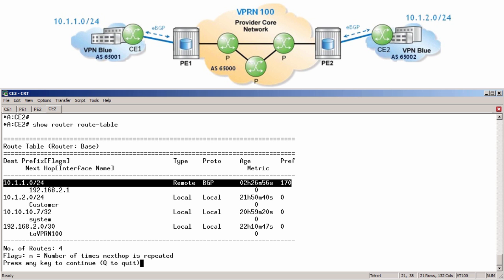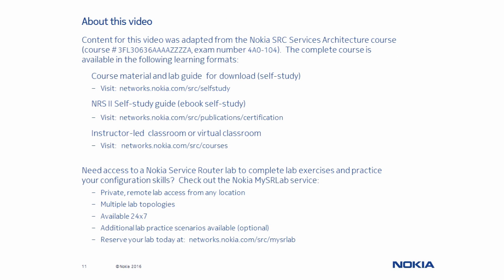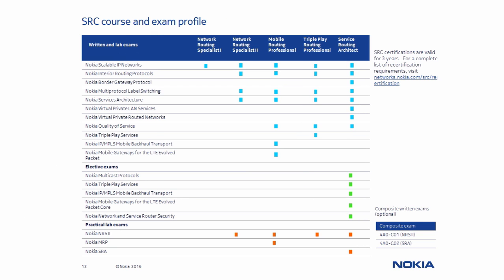And that about does it for this video on VPRN route distribution. Thanks for watching and see you next time. Content for this video was adapted from the Nokia Services Architecture course. You can access the complete course via any of the three learning formats shown on this page, as well as get remote private access to a service router lab to complete the course lab exercises. If you are interested in obtaining an SRC certification, this table identifies the recommended courses and required exams for each of the five available certifications in the program.